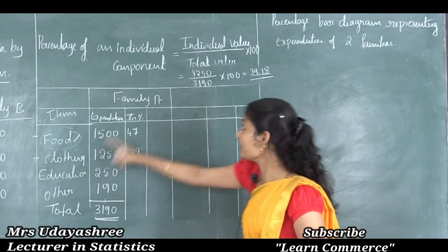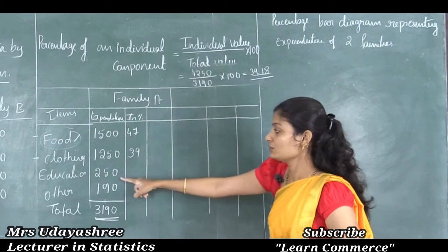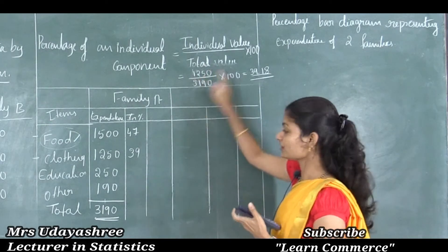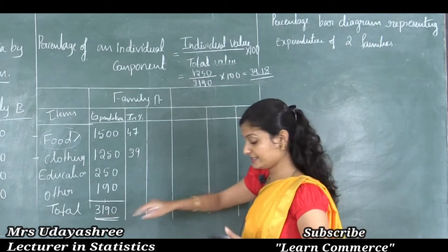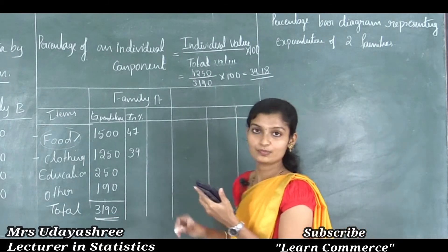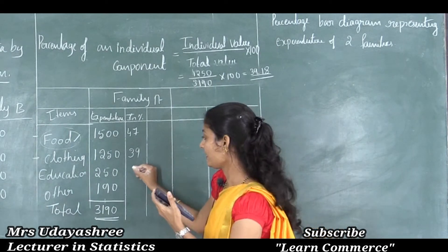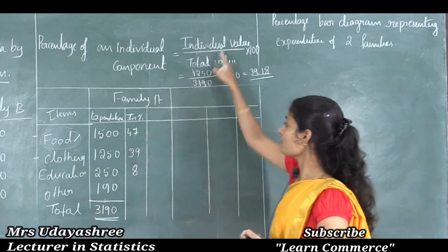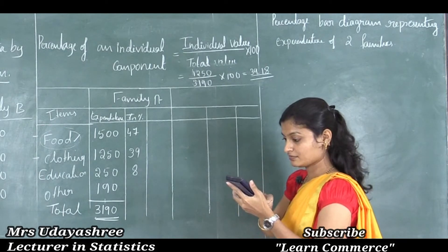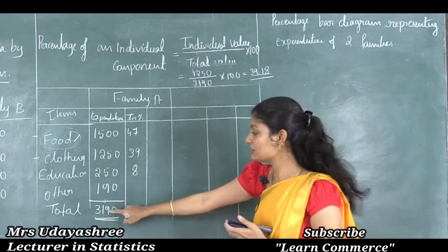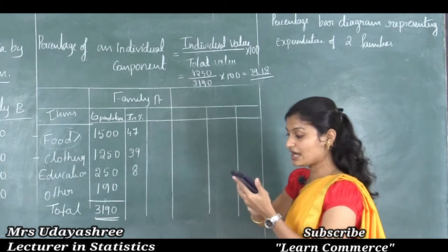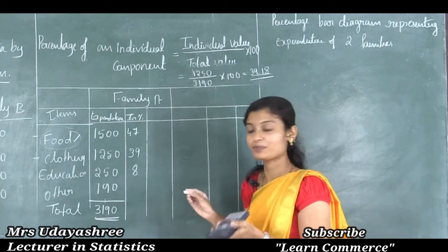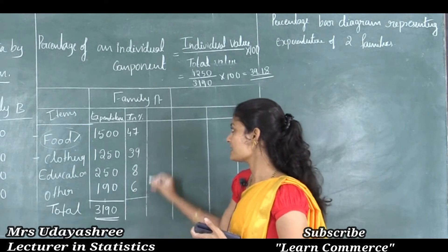For education, the individual value is 250. So percentage = 250 ÷ 3190 × 100 = 7.8, approximately 8%. For others, the individual value is 190. So percentage = 190 ÷ 3190 × 100 = 5.95, approximately 6%. These are the percentage values for family A.